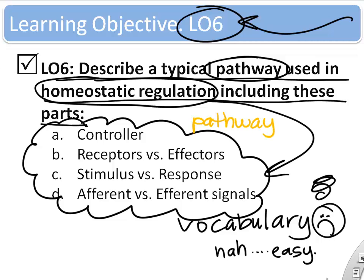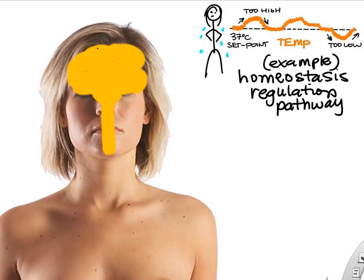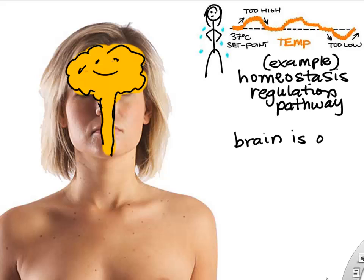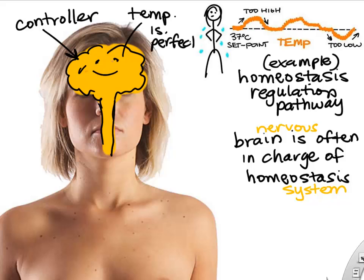Let's look at temperature regulation as an example of this vocabulary. Where in the body is it decided whether we're at a good or bad temperature? In most cases the brain is the controller — it decides whether blood pressure or temperature is too high or too low. There's a region in your brain called the hypothalamus that decides all day long whether your temperature is too high, too low, or just right.